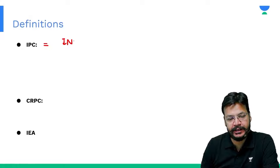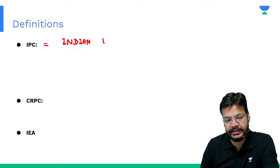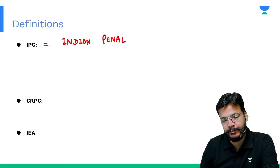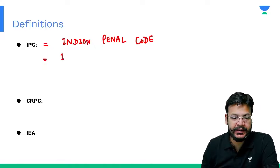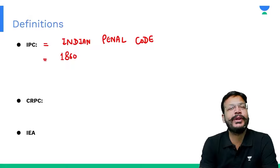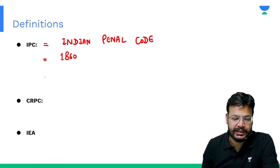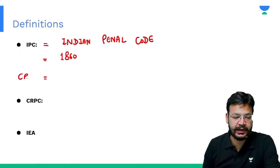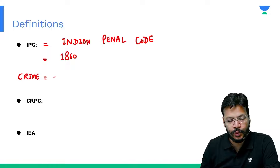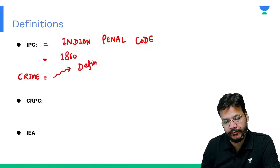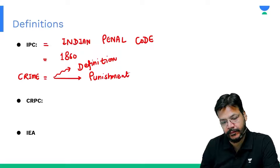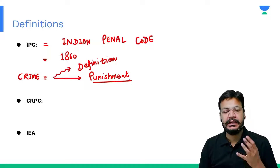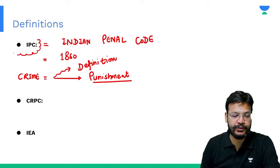The first is IPC — Indian Penal Code. This law was implemented in 1860 in India, a very old law. IPC is related with crime — all the definitions of crime as well as the punishment of crime. These are given in this very important law in India, which is known as IPC.